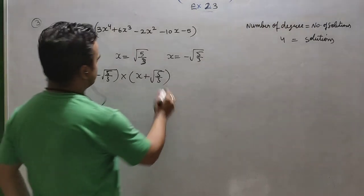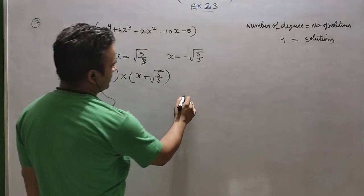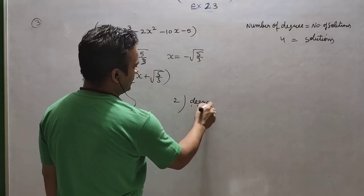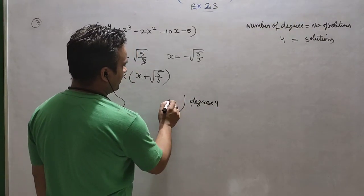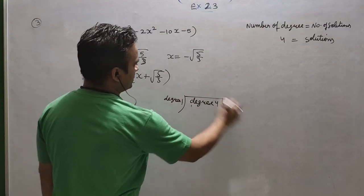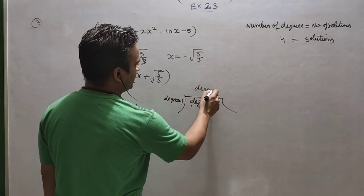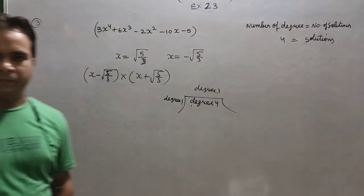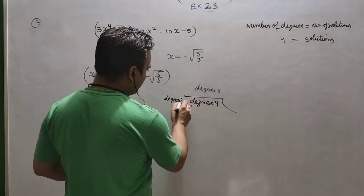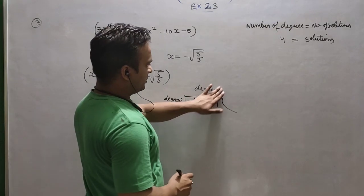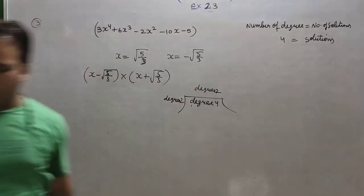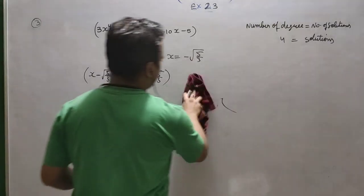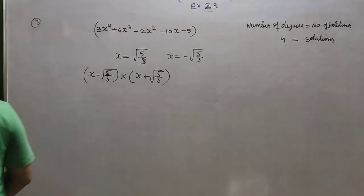If we do single ones separately, we will get a cubic polynomial. Suppose a degree-4 polynomial is divided by degree-1, the quotient will be degree 3 — 4 minus 1 — then again we have to use hit-and-try. So the better option is: if I divide by degree 2, the quotient will be degree 2 and then we can use the middle term formula.